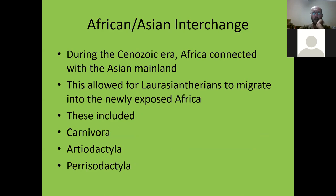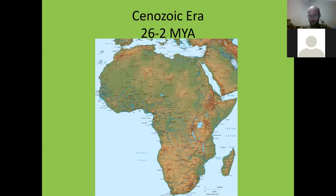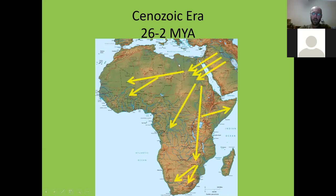The last topic: the African-Asian interchange during the Cenozoic era, about 26 million years ago. Africa finally connected with the Asian mainland, allowing Laurasiatherians to migrate into Africa. These include all our modern carnivores — lions, leopards, hyenas — which out-competed the African carnivores. Their ancestors came from Asia. Artiodactyls — ruminants like giraffes — also had ancestors from Asia. And perissodactyls actually evolved in the Americas about 30 odd million years ago. The only animals that really escaped out of Africa were the hyraxes and the elephants.